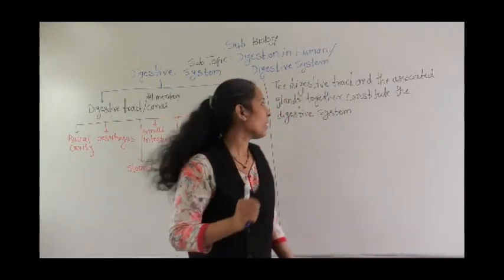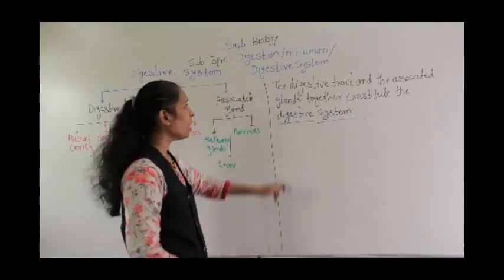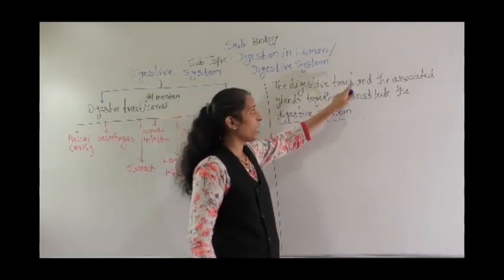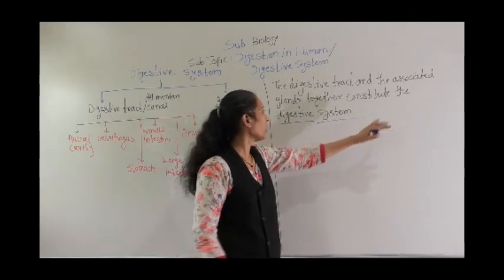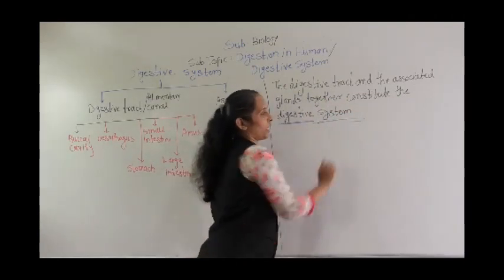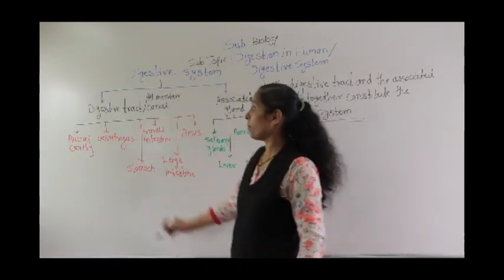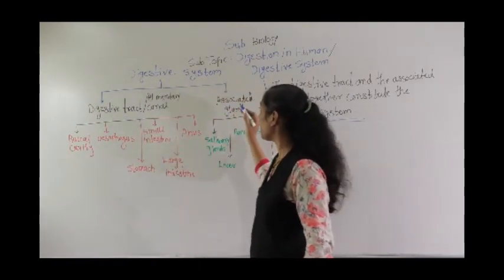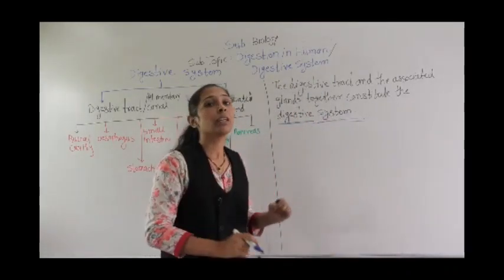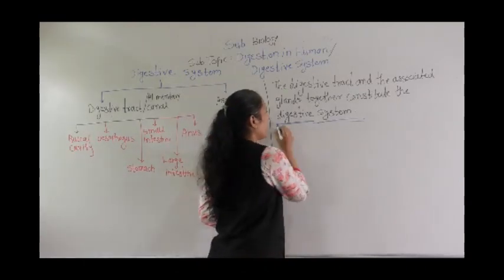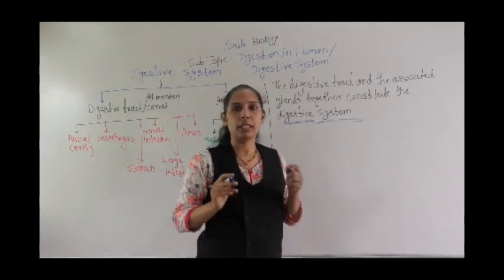So, the digestive tract and the associated glands together constitute the digestive system. The digestive system is formed by these two components — the digestive tract and the associated glands — which together form one digestive system.